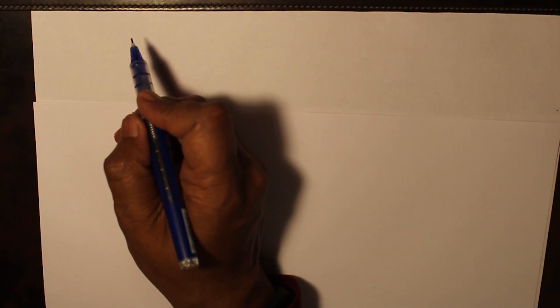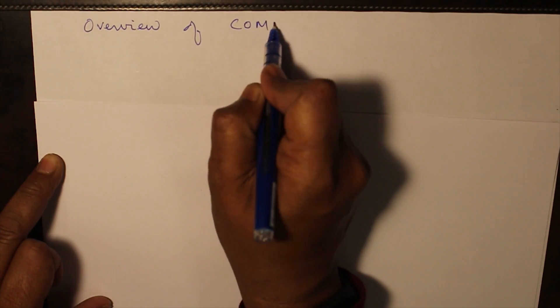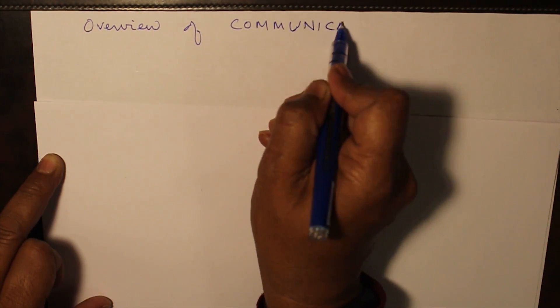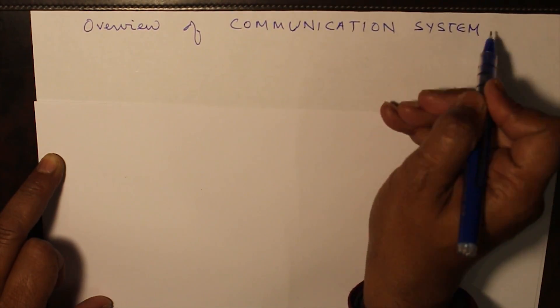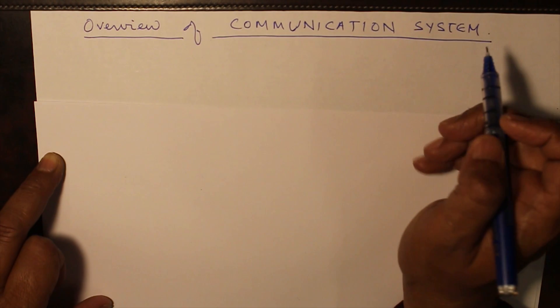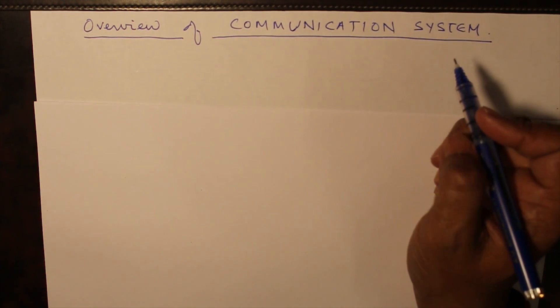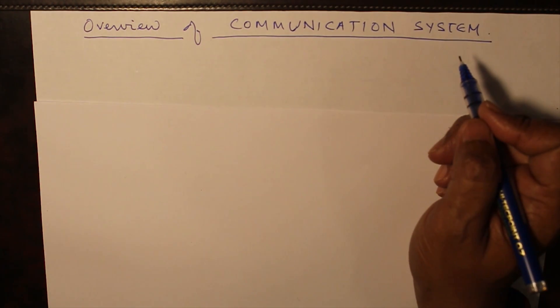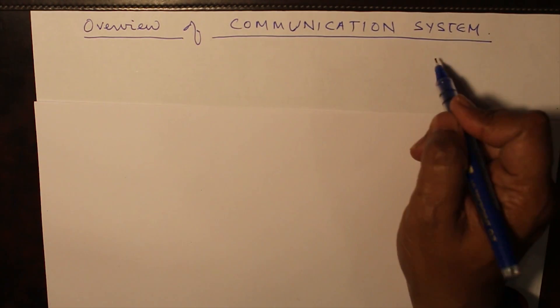Now, after knowing what a communication system is and how communication takes place, let's have an overview of a communication system. In this overview, we are basically going to consider how a communication system is built.